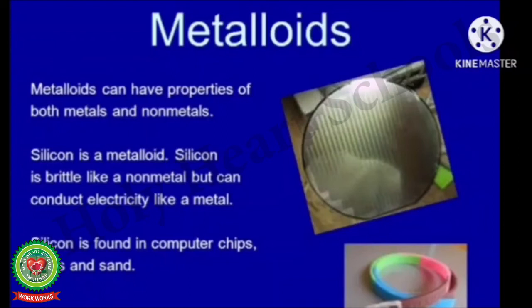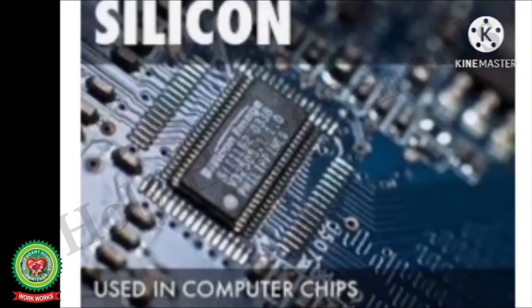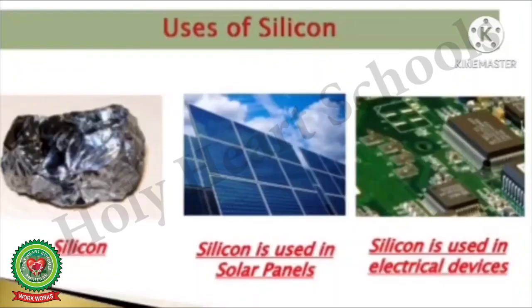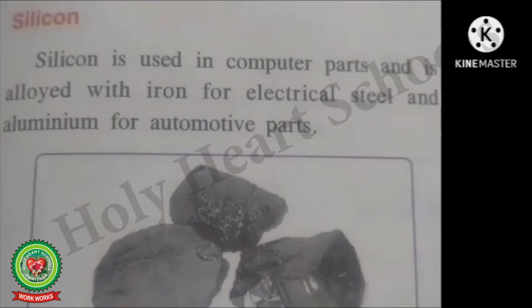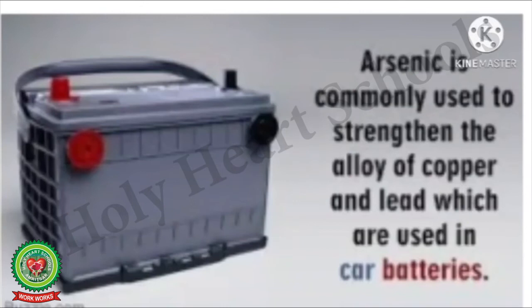Metalloids can have properties of both metals and non-metals. Silicon is a metalloid — it is brittle like a non-metal but can conduct electricity like a metal. Silicon is found in computer chips, glass and sand. It is also used in solar panels and electrical devices, as well as being alloyed with iron for electrical steel and with aluminium for automotive parts.